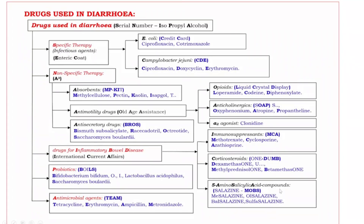Last, 5-Aminosalicylic Acid Compounds all end with the suffix -salazine. The mnemonic is MOPS: M for Mesalazine, O for Olsalazine, P for Balsalazine, S for Sulfasalazine.